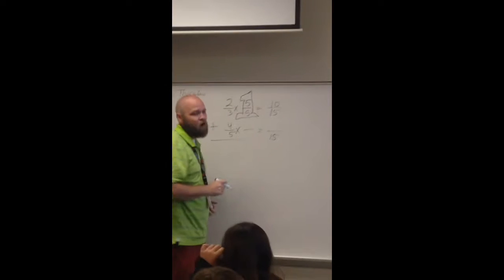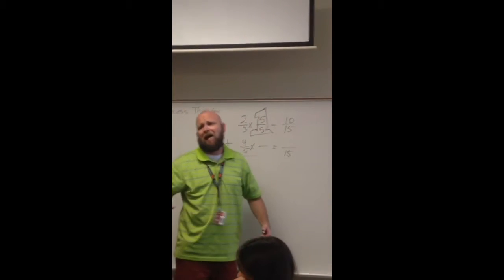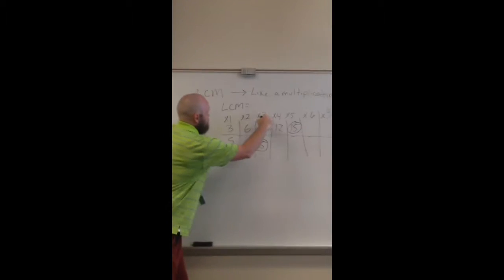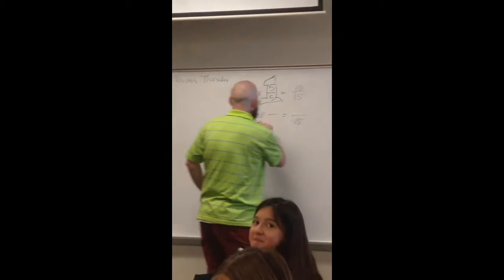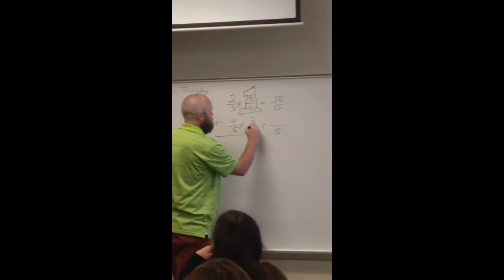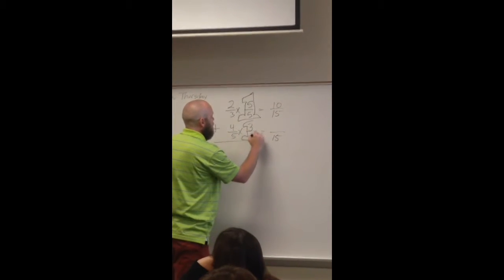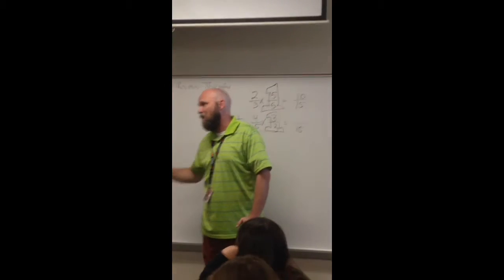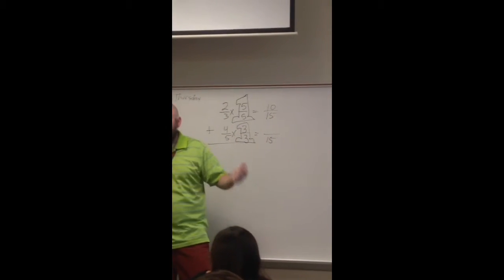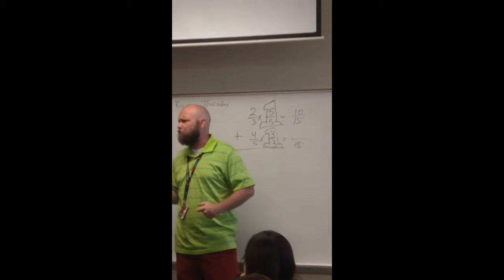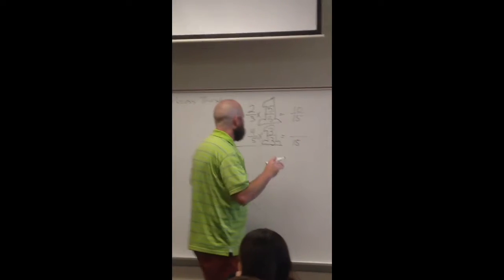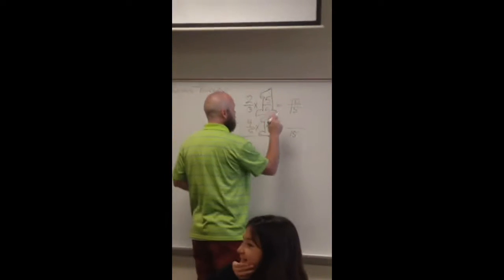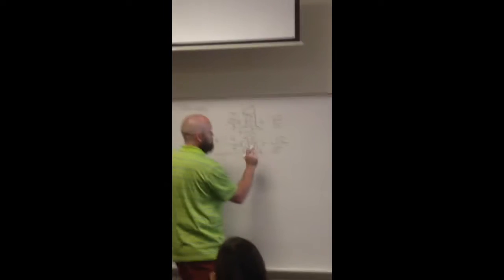I have to multiply by a fraction that equals 1 on my second fraction as well. I have to look at 5: 5 times 3 is 15. So I need to multiply by this fraction that equals 1. I multiply both my numerator and denominator by the same number, because 3 over 3 equals 1. I believe you have notes on this in your journal. When multiplying fractions, I look straight across: 4 times 3 is 12, 5 times 3 is 15.